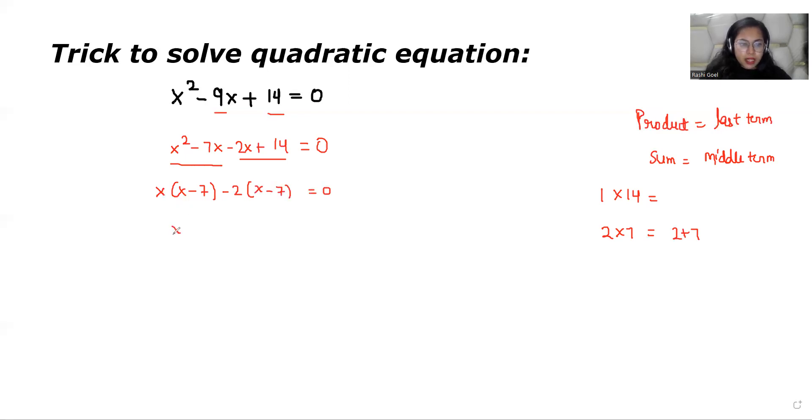Now we have two roots for this equation that is x minus 7 or x minus 2. So one by one we can put it equals to 0. So first root is 7 and the second one is 2.